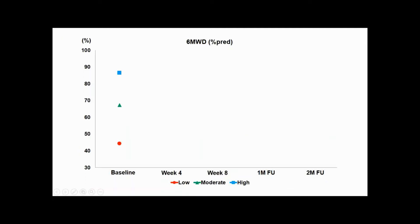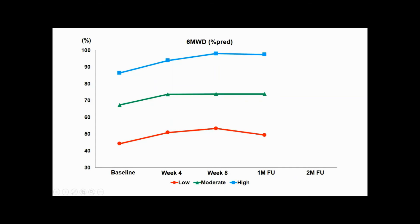Compared to baseline, 6-minute walk distance improved significantly after 4 weeks of training for all groups. But only the high Functional Exercise Capacity group demonstrated further increases at 8 weeks of training. The improvement in 6-minute walk distance after 8-week training was maintained in the moderate and high Functional Exercise Capacity groups at 1 month and 2 month follow-up. However, the low Functional Exercise Capacity group showed a declining trend of 6-minute walk distance at 1 month and 2 month follow-up.